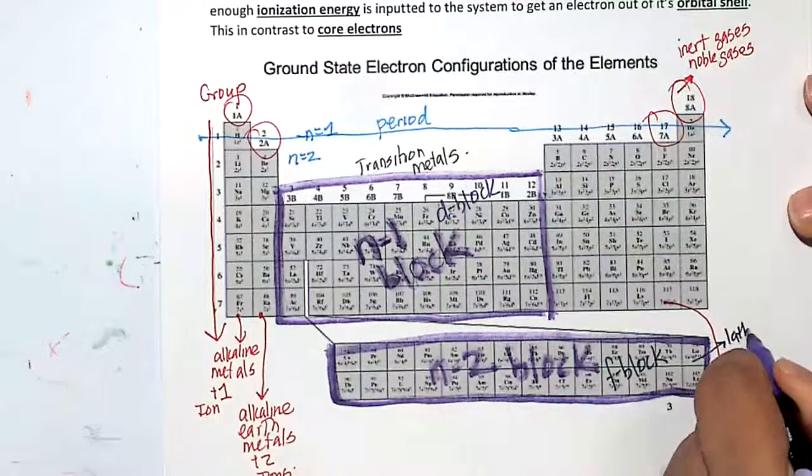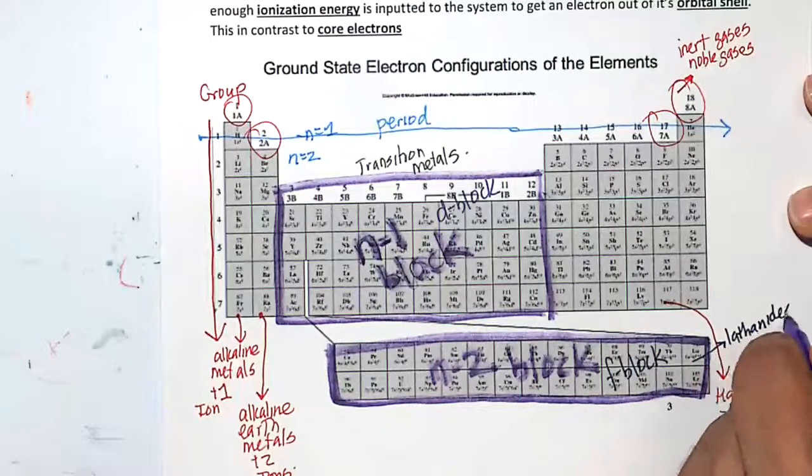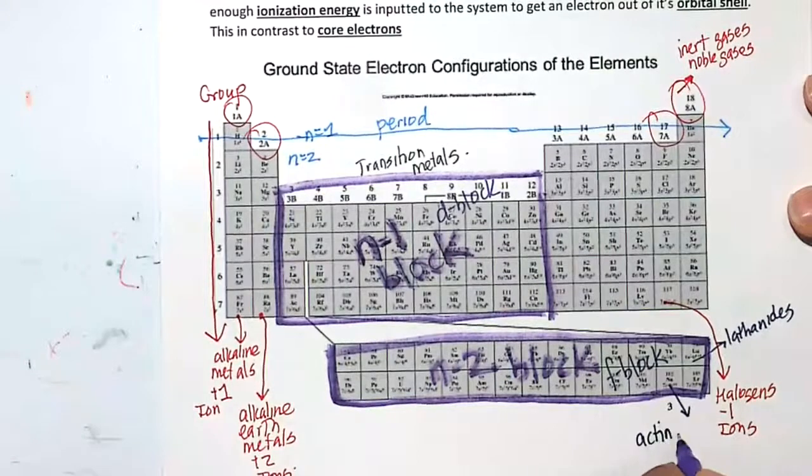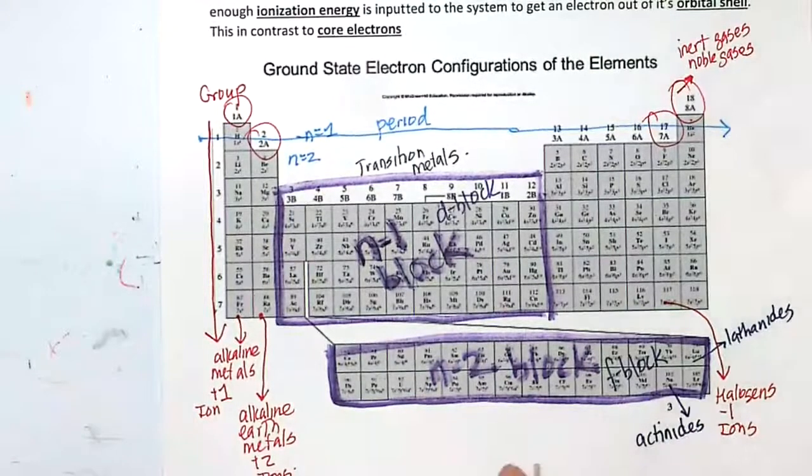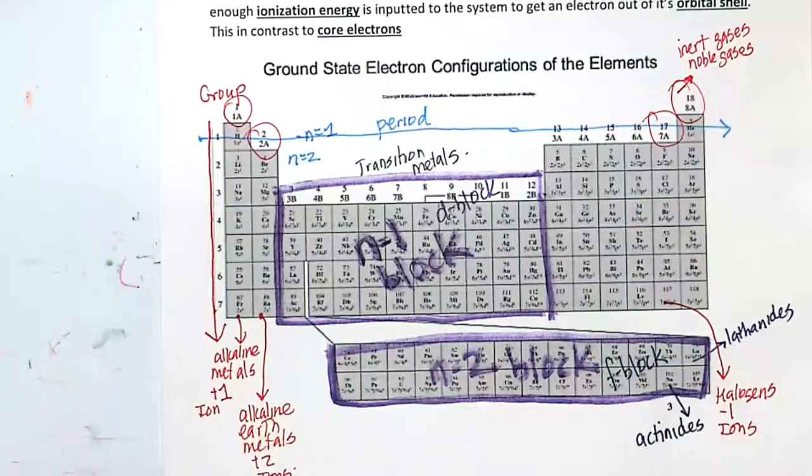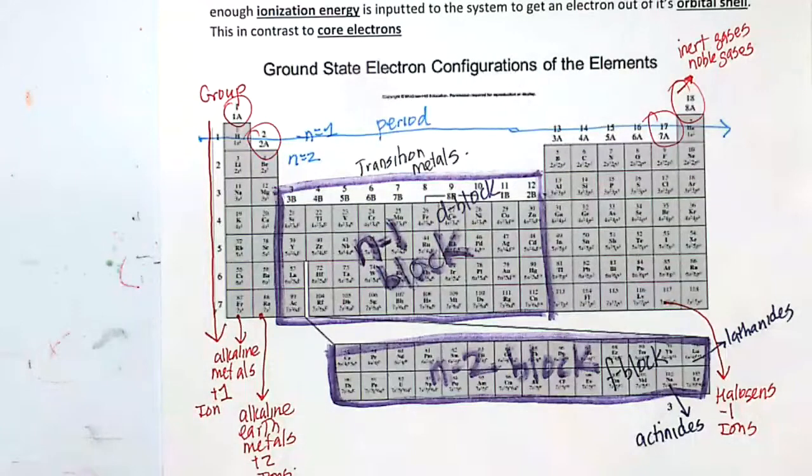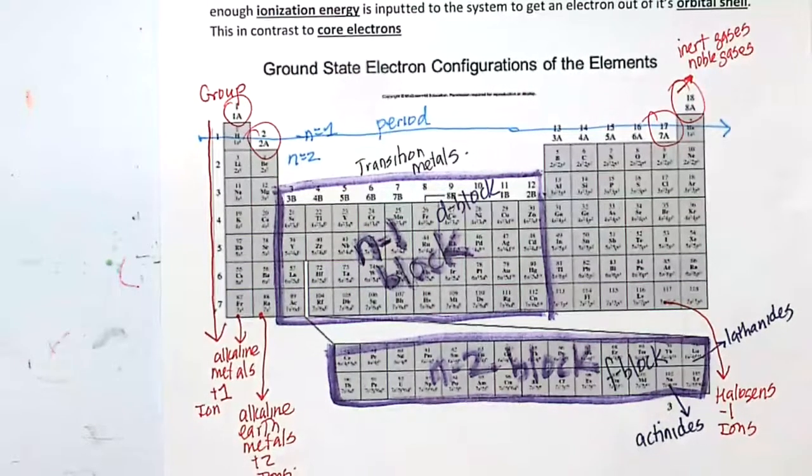These here are called the lanthanides, and these here are called the actinides. A lot of iPhone material or smartphone material, I think they mine it from this area of the periodic table, the lanthanides and the actinides.